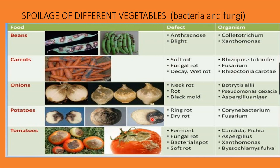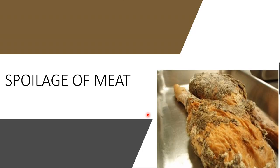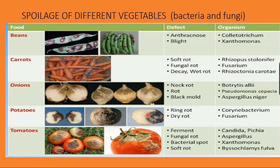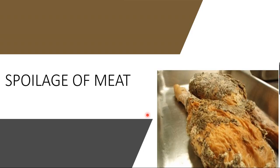These are the different bacteria and fungi involved in the spoilage of different vegetables. We have now ended the topic on spoilage of vegetables and fruits. We will discuss spoilage of meat and spoilage of fish in the next part.